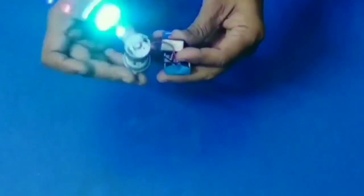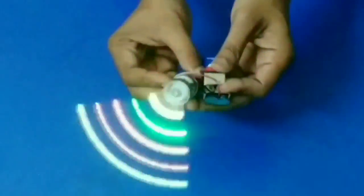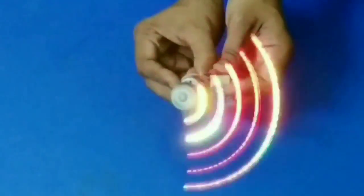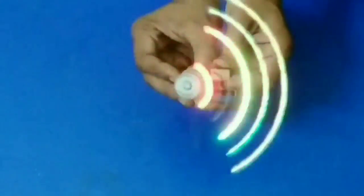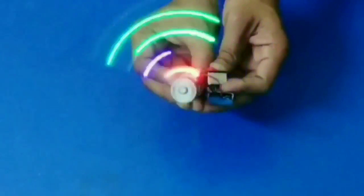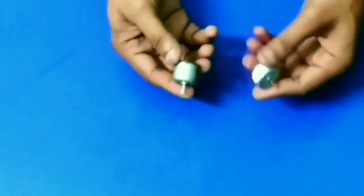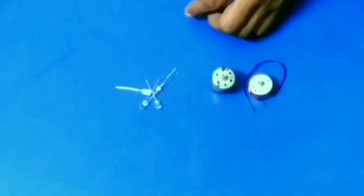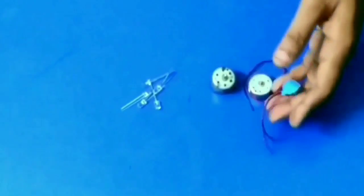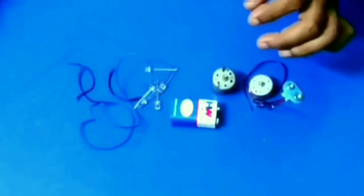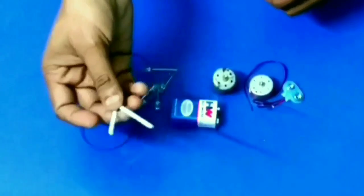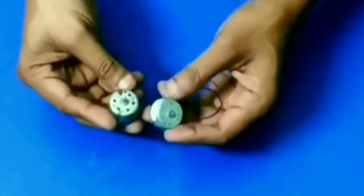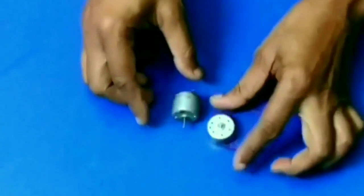I am going to show you the light. We are going to install the DC motor on top. The battery is on the top. I am going to install the motor.